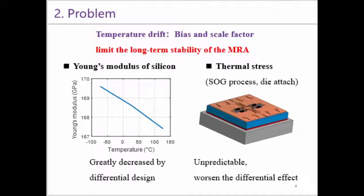There are two major sources of structural temperature drift. First, the Young's modulus of silicon. Second, the thermal stress generated during the SOG process and die-attach process. The first error can be greatly decreased by differential design, but the second one is unpredictable and will worsen the differential effect.